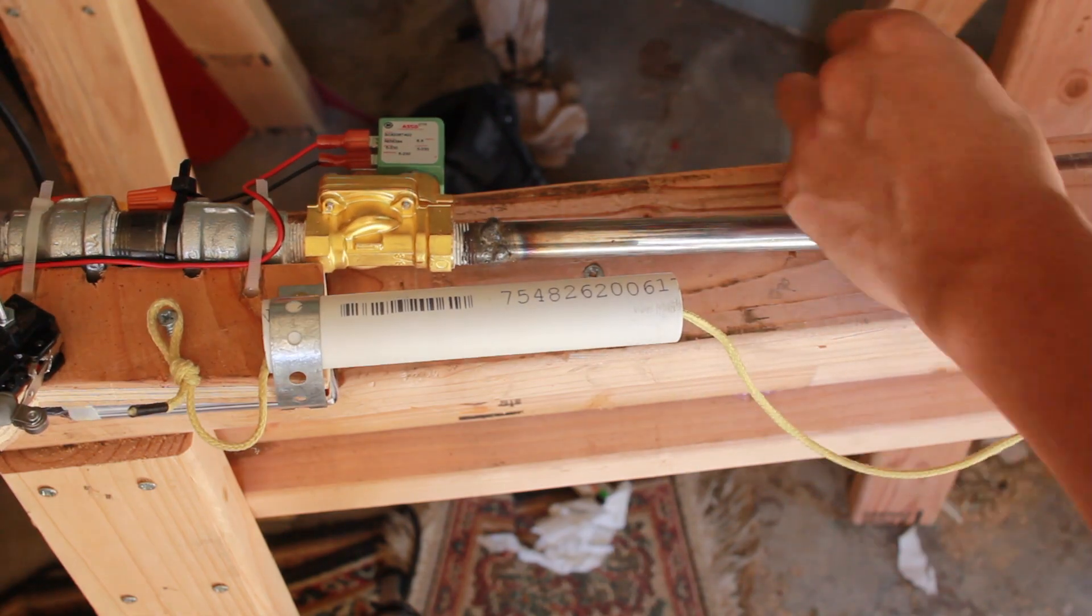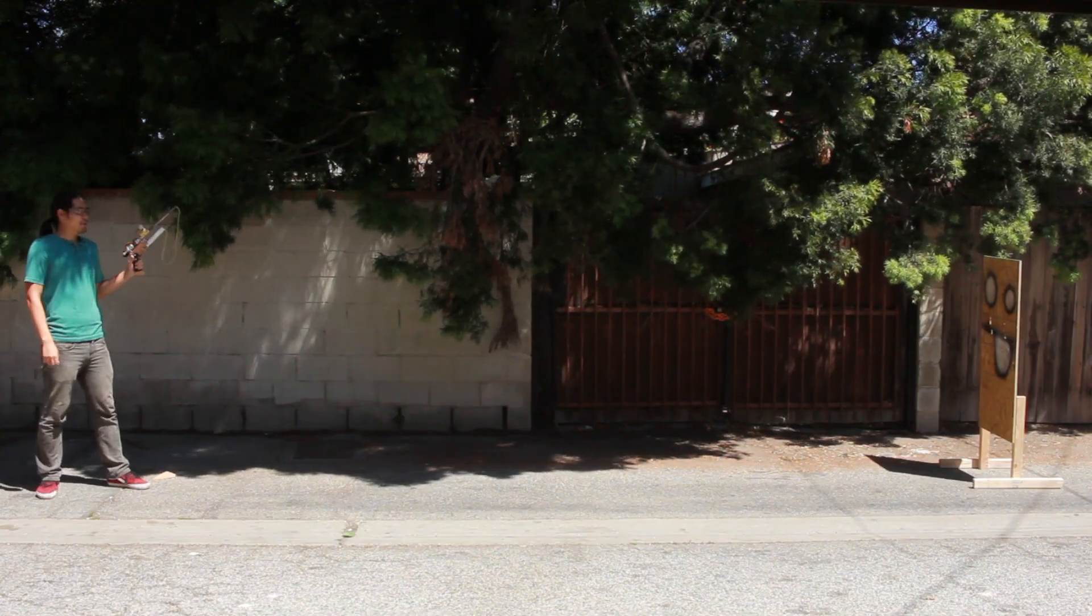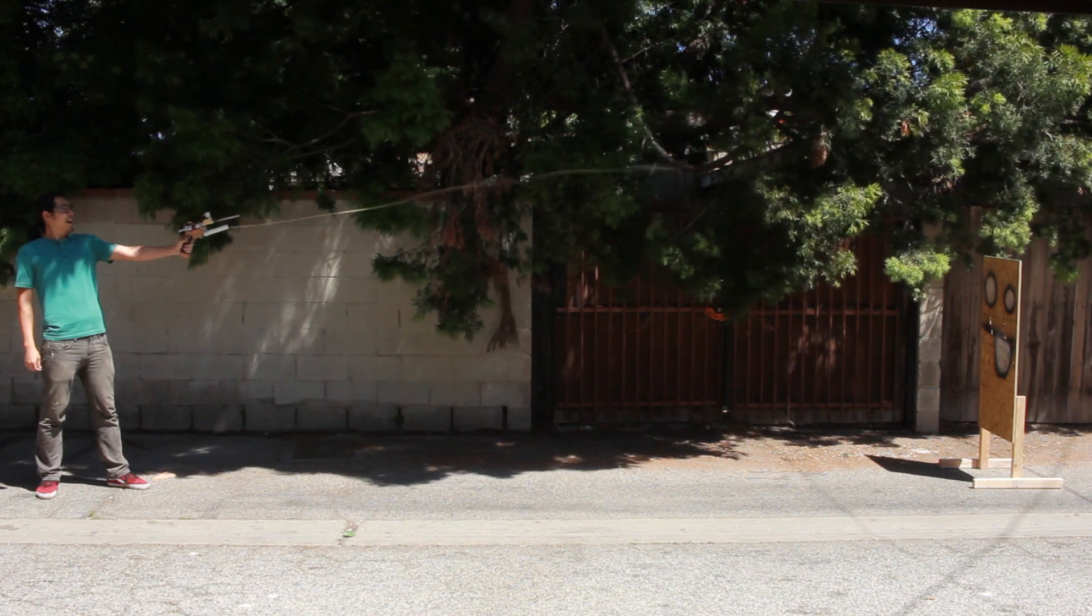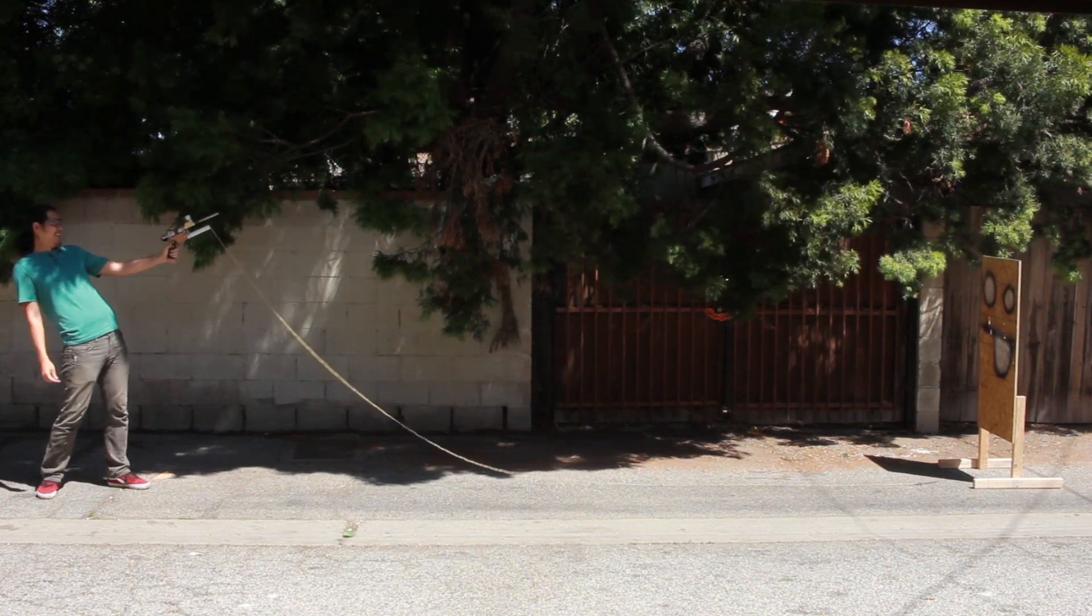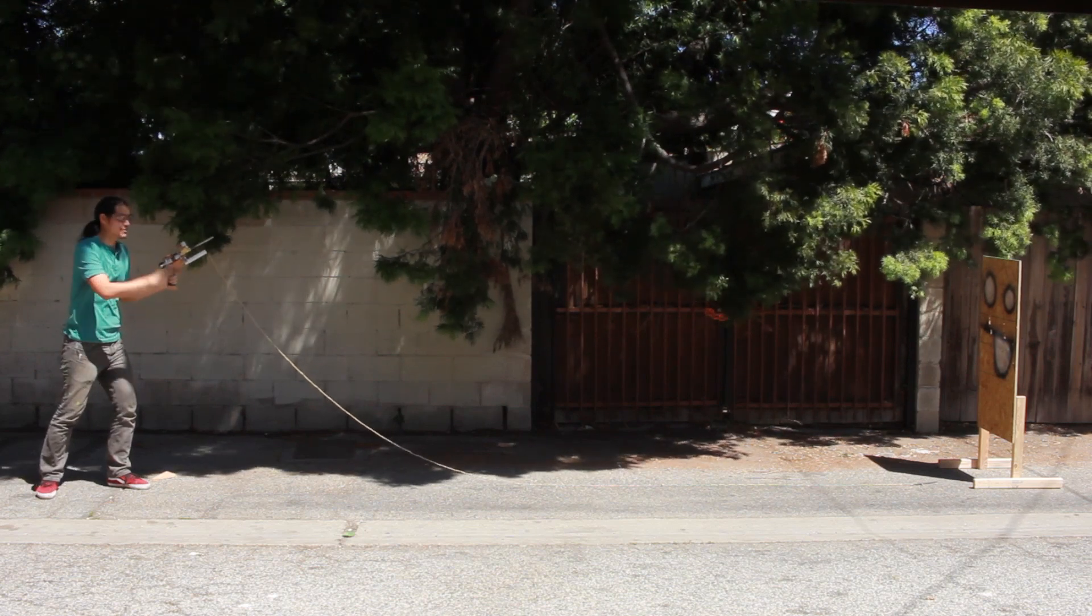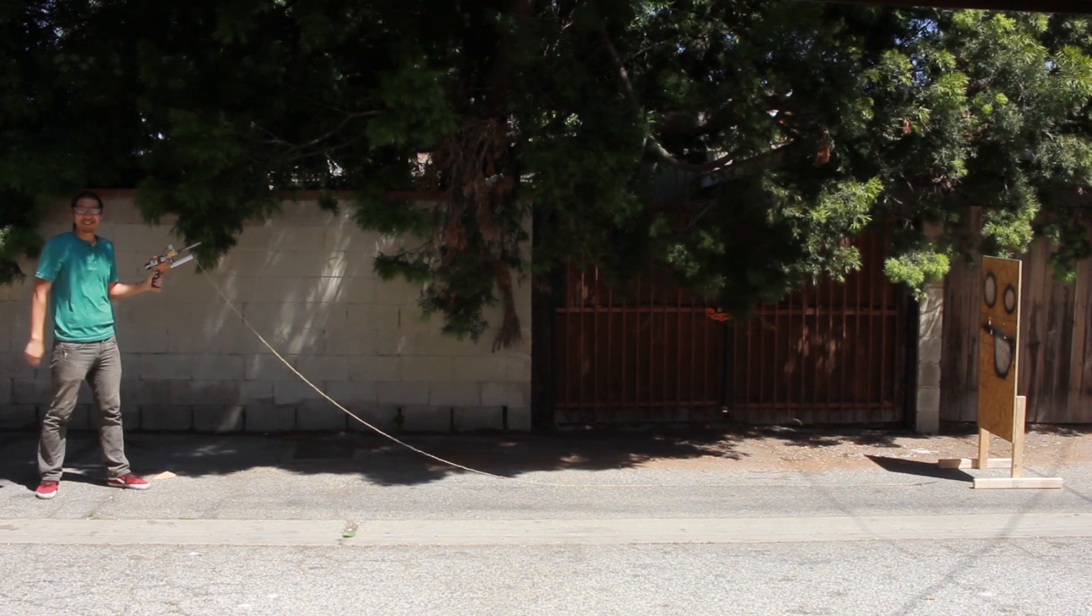First up will be the Colin Furze style grappling hook with 20 feet of Kevlar line. Colin Furze style grappling hook, 150 PSI, in three, two, one. It didn't quite make it. Just the grappling hooks are made of steel. It's really heavy. So let's take a look at that footage.